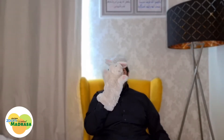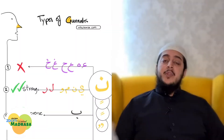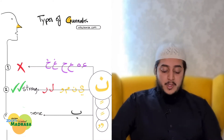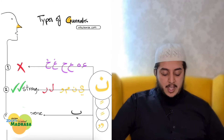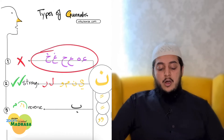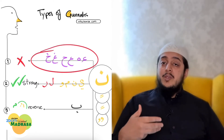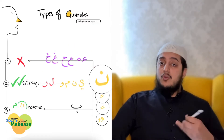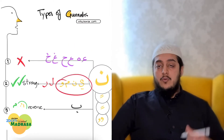Assalamu alaikum. Guys, it's not a long lesson - this lesson is going to be very short and very easy inshallah. Remember the four types of ghunna I showed you before? We said these types of ghunna happen because of the letters that we see after noon or tanween. For example, we do idhaar - no ghunna - when we see the throat letters after noon and tanween. We tend to do a strong ghunna when we see ya, noon, meem, and waw.